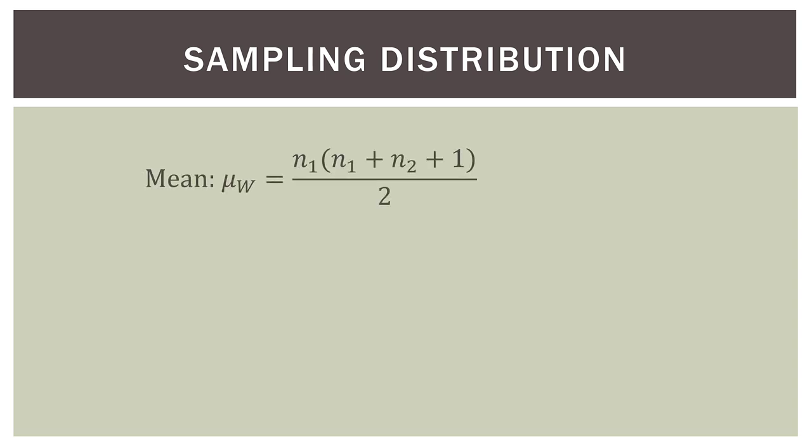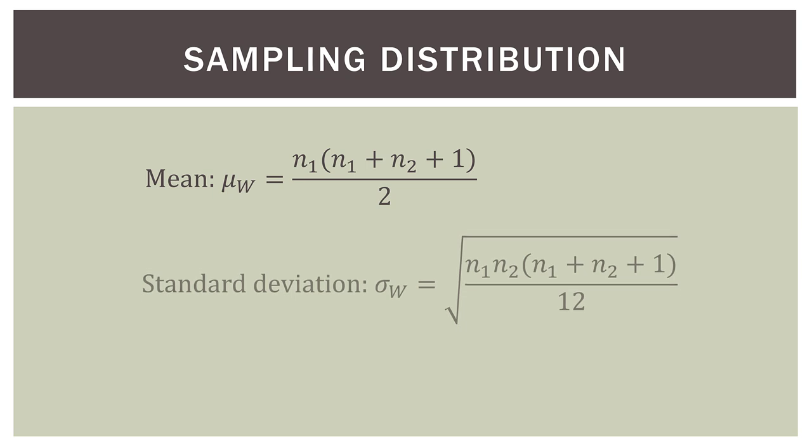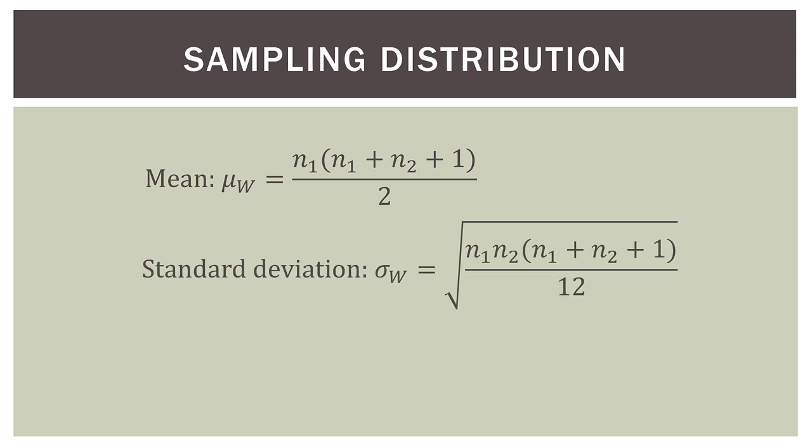Now we need a few things to actually conduct this test. The first is the mean, mu sub W, which equals n sub one times the quantity (n sub one plus n sub two plus one), all divided by two. The standard deviation, sigma sub W, is equal to the square root of n sub one times n sub two, times the quantity (n sub one plus n sub two plus one), all divided by 12. The n's are just the sample size for each sample — usually they're equal, but they don't have to be. That's one of the advantages of nonparametric statistics.